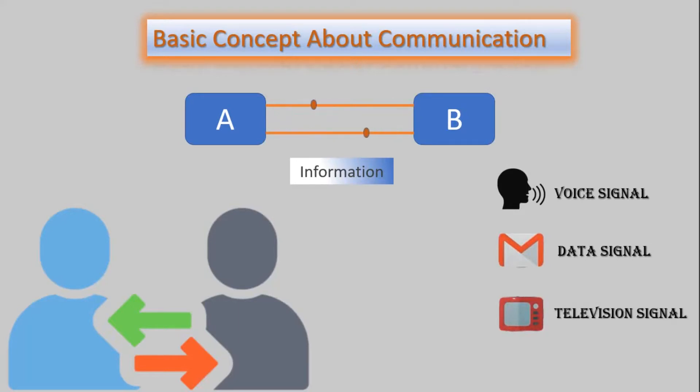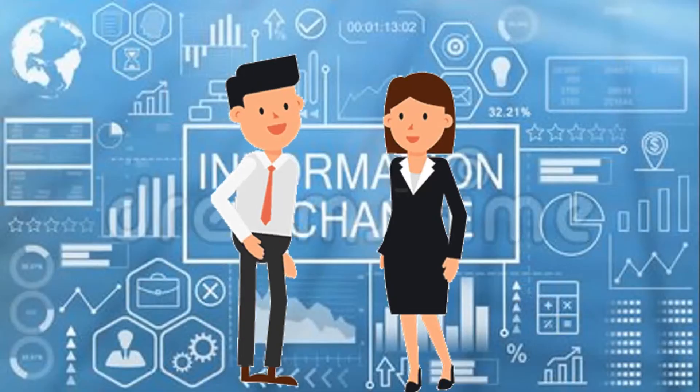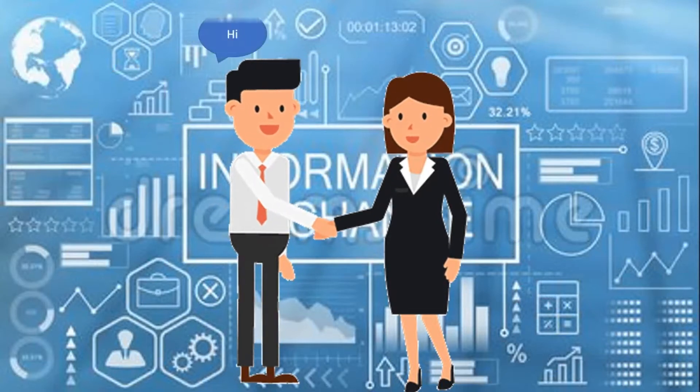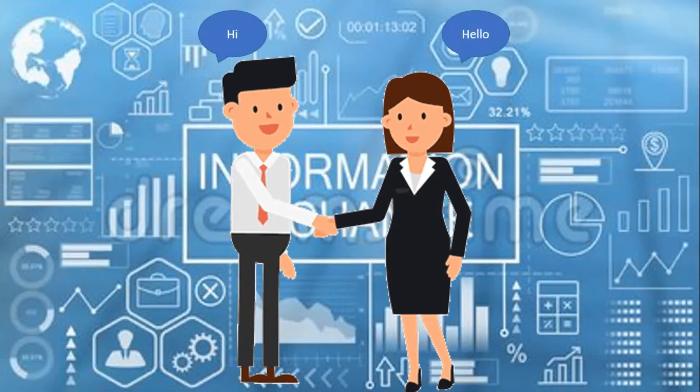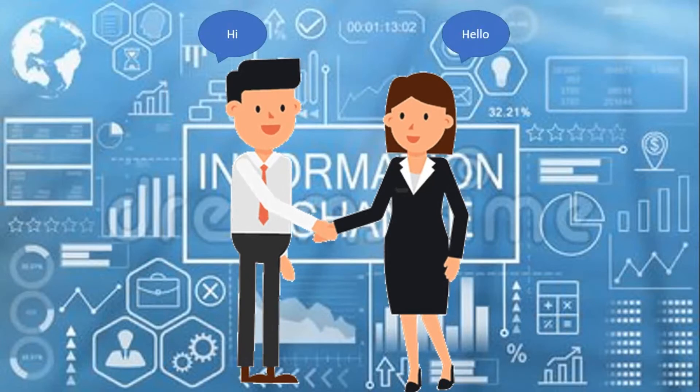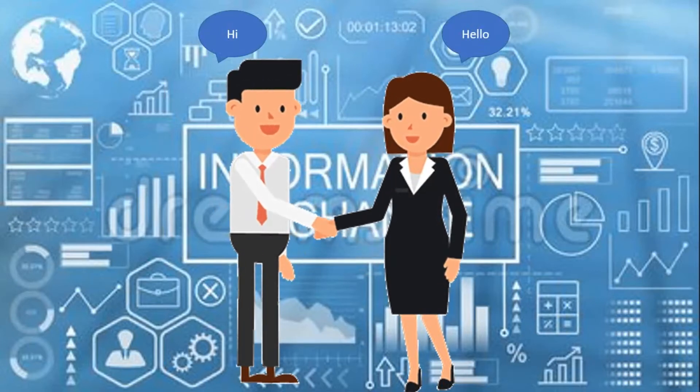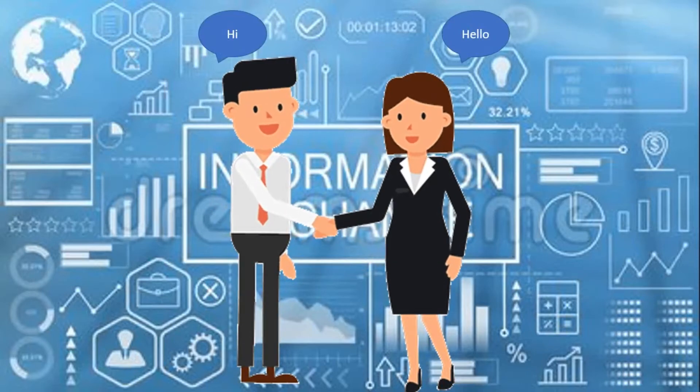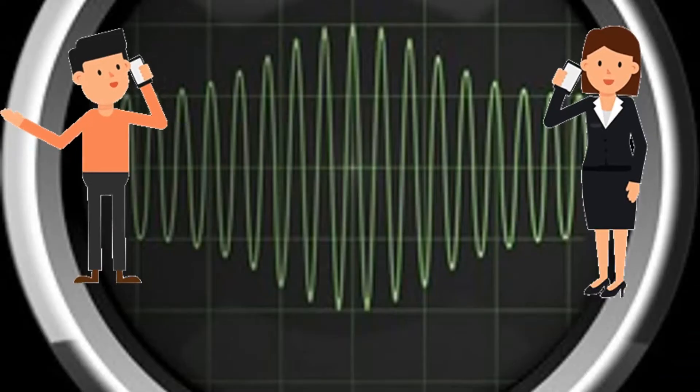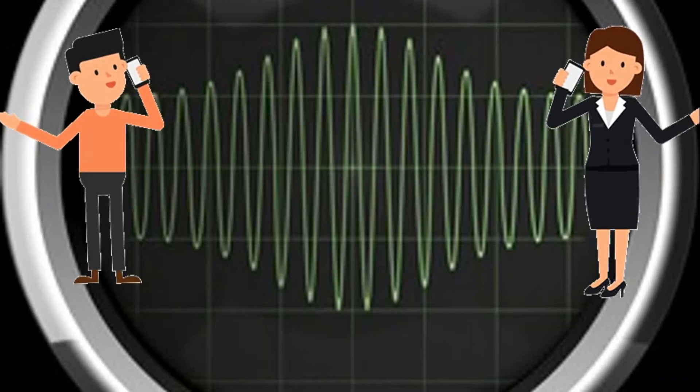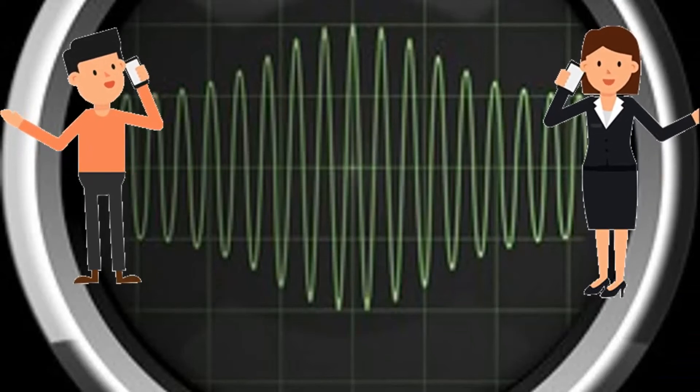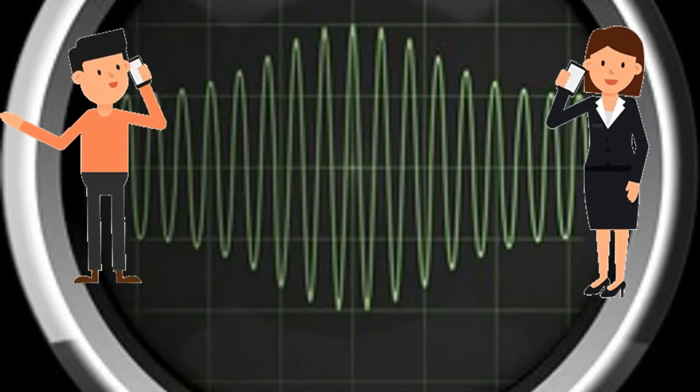Before going to the technical details about modulation, let's try to understand it with a simple example. Here you can see whenever we meet someone, there is no need of modulation to exchange information or more precisely to talk with that person. But when we want to talk to someone who resides far away from us, then we cannot reach out to that person without modulation.